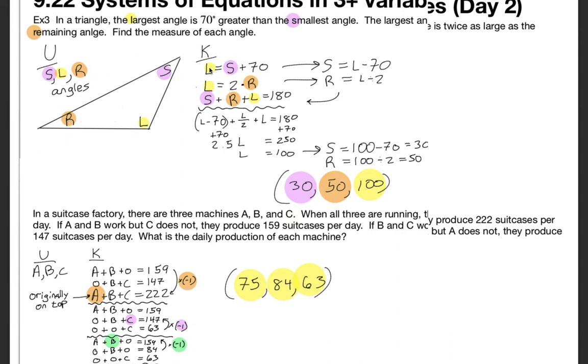The knowns are going to be the largest is the smallest plus 70. That's here you can see from the first sentence. Then the largest angle is also twice the remaining angle. Find the measure of each. Also know that add them all up and they get to 180. So we're going to do some substitution here. It looks like we've got two different equations that have L equals something, L equals something. So I think I can rewrite the third equation so that we have everything in terms of L.